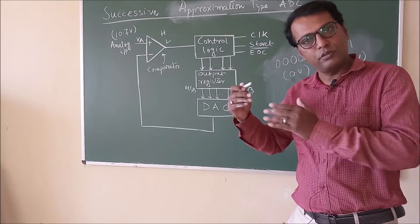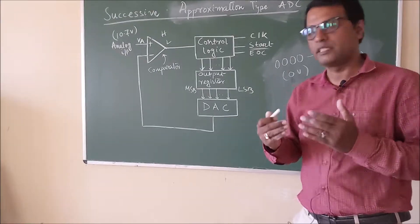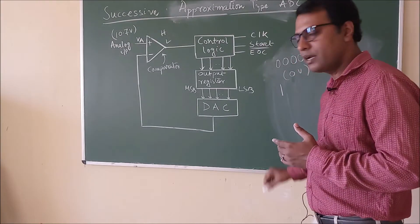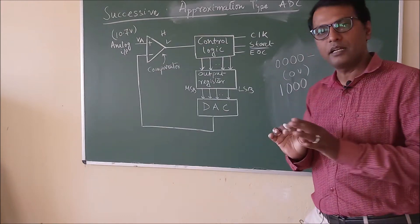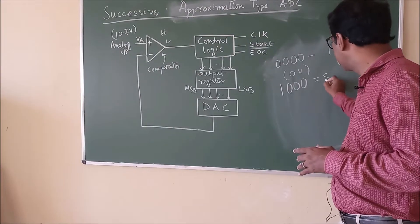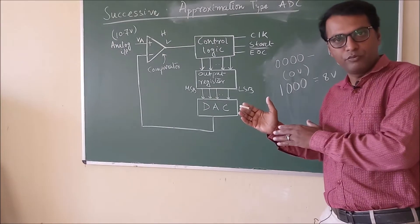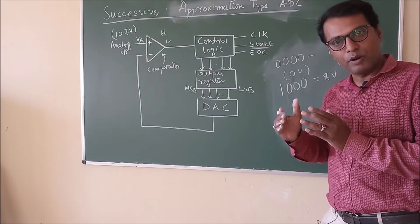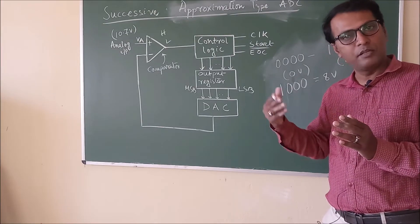Initially it starts from MSB, so the value begins at 0000. When the clock pulse is applied, the output register value starts from MSB, so the MSB is set to 1 and the other bits remain the same. Now 1000 means 8 volts. For reference: 0000 means 0V, 0001 means 1V, 0010 means 2V, 0011 means 3V.